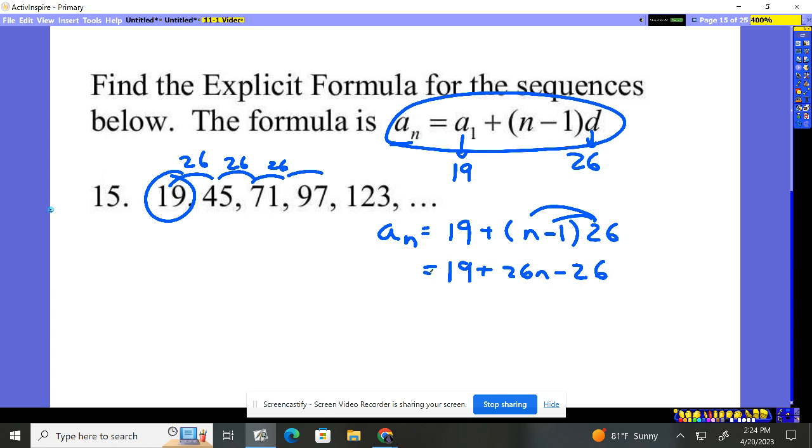And so the final equation: 19 minus 26, put that together, there's negative 7 plus 26n. What this allows us to do...